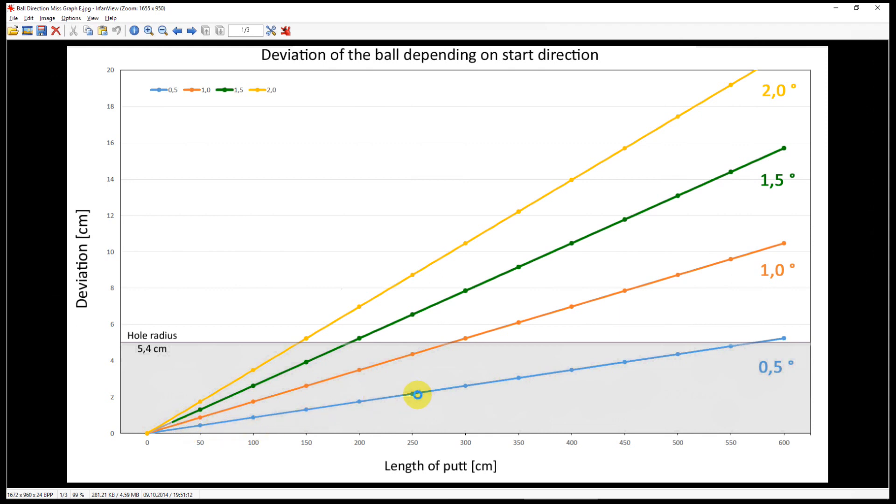If you would only start the ball 0.5 degrees off the line, then you would only miss the hole after 5.5 meters. So you see that this data, which we measure with SamPuttLab, can be translated into the direction relative to a hole on a specific distance.